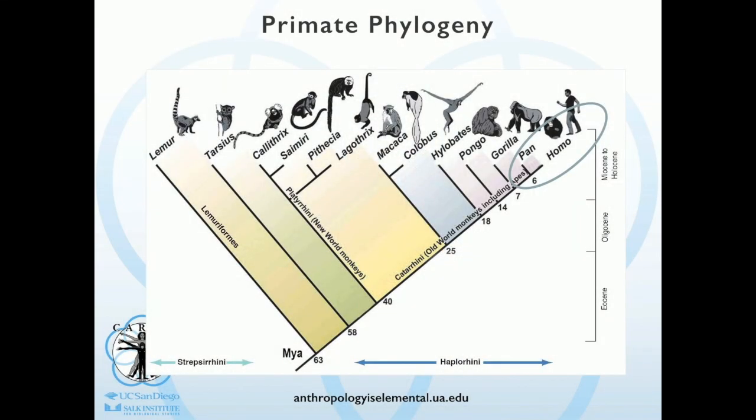Here is the primate phylogeny, and I put it in this position because I want you to see that, as Pascal was mentioning, you can see how closely related we are to pan — both pan paniscus and pan troglodytes — versus the rest of the nonhuman primates. Yet to understand something about our own behaviors, I think we have to look at the other nonhuman primates, because in many ways they have things that are more similar to us than our own close genetic relatives.